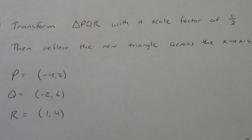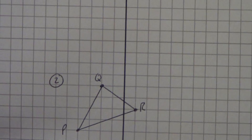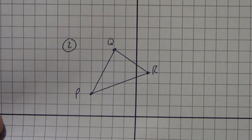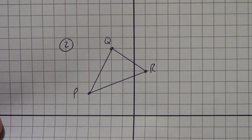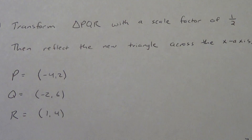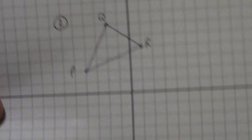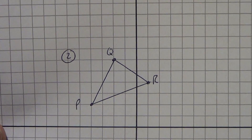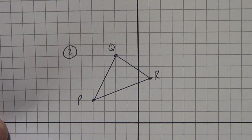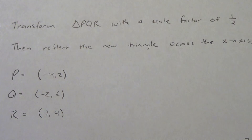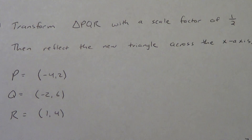You should have paused the video and at least gotten that graph. It should look like this. P is over left four and up two — negative four, two. Q is left two and up six — negative two, six. And R is right one and up four — positive one, positive four.